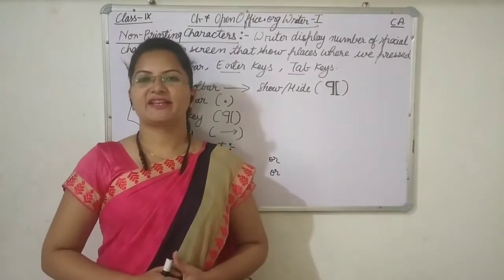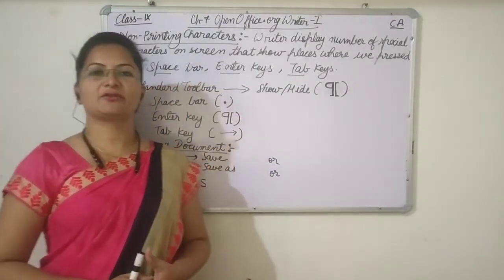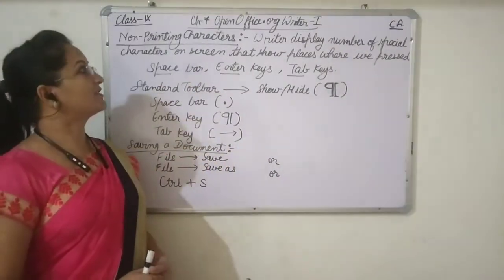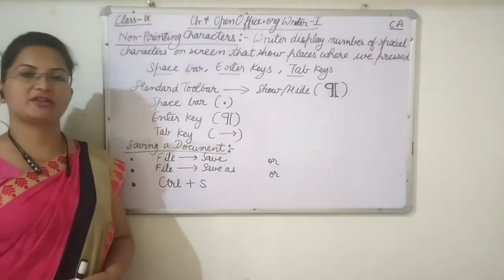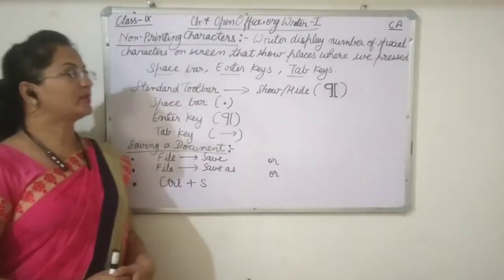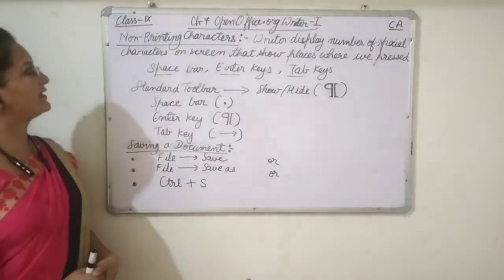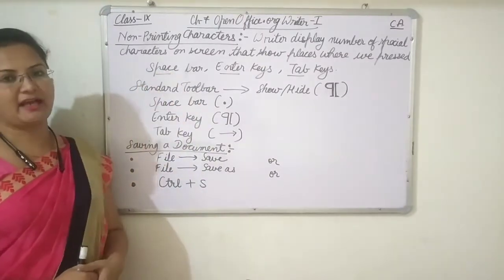Hello children, welcome to CA session. Today we will continue the same chapter — Chapter 7, OpenOffice.org Writer 1. Today we will discuss about non-printing characters.